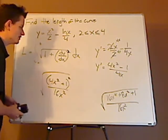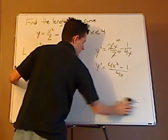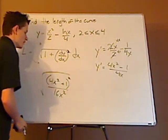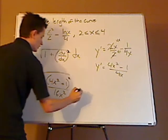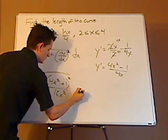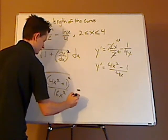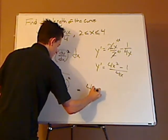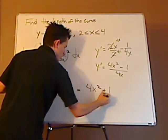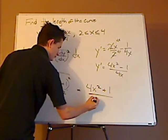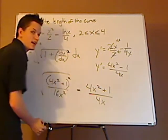See that? Now you can square root both the numerator and the denominator. When you do that, that's going to give you 4x squared plus 1 over 4x. You see that? I just removed the square root because it just simplified.